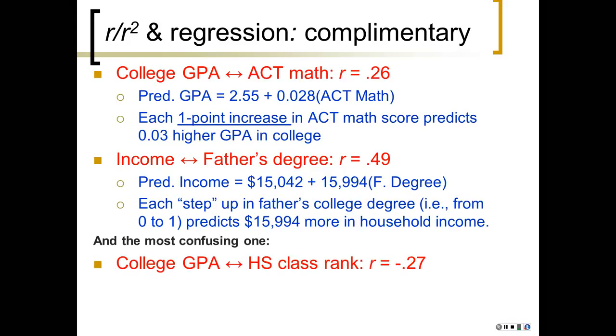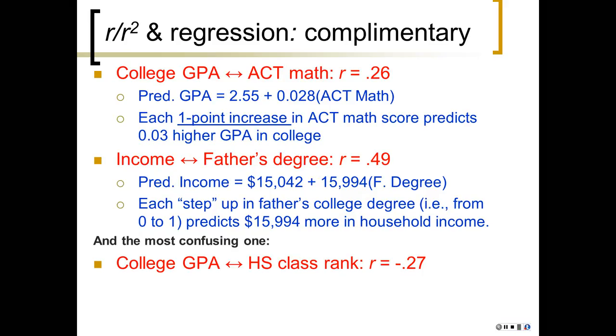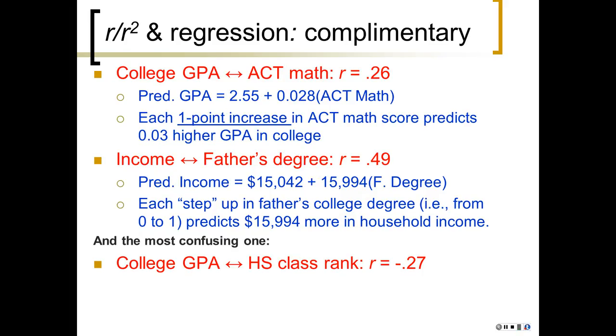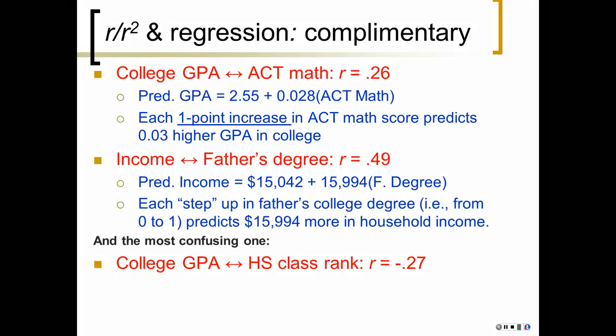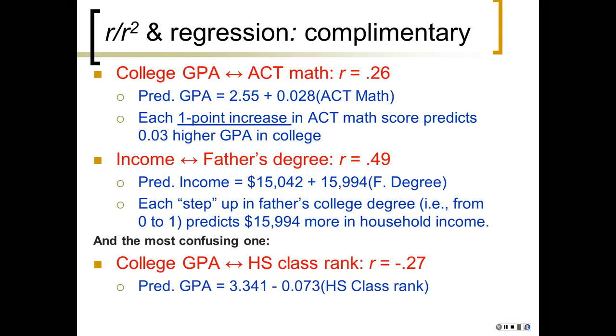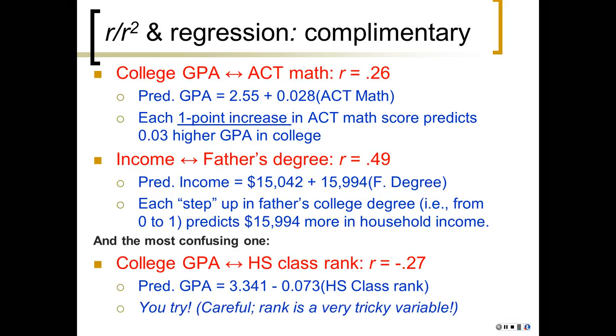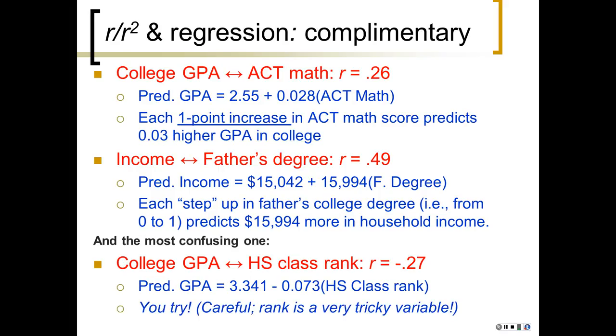And here's a confusing one. College GPA is correlated with class rank at negative 0.27. What you have to lose is the idea that class rank really matters the way you think it does. Class rank is backwards. So a low rank, one, means you're at the highest rank, right? We say you have a high ranking when technically the number was a low ranking. So the math doesn't know that one is supposed to be good. It just says negative correlation. So there you go. So you can say predicted GPA is 3.341 minus 0.073 times the high school class rank. And so you try and interpret this. For every one step up in blah, what do you get?